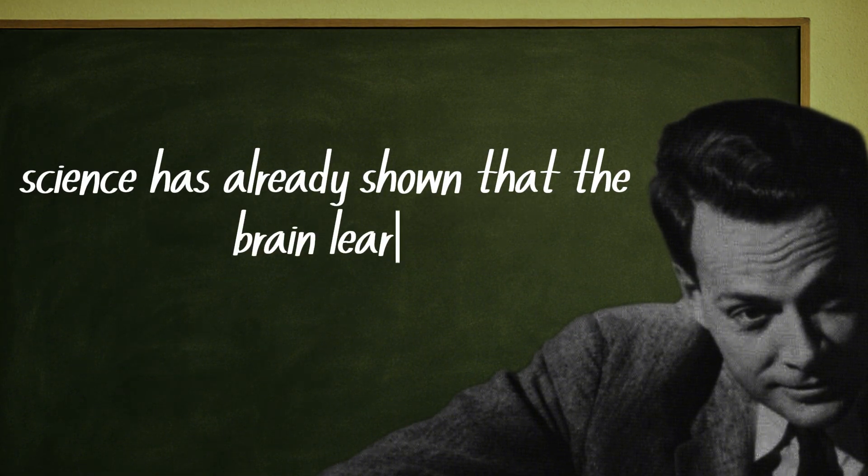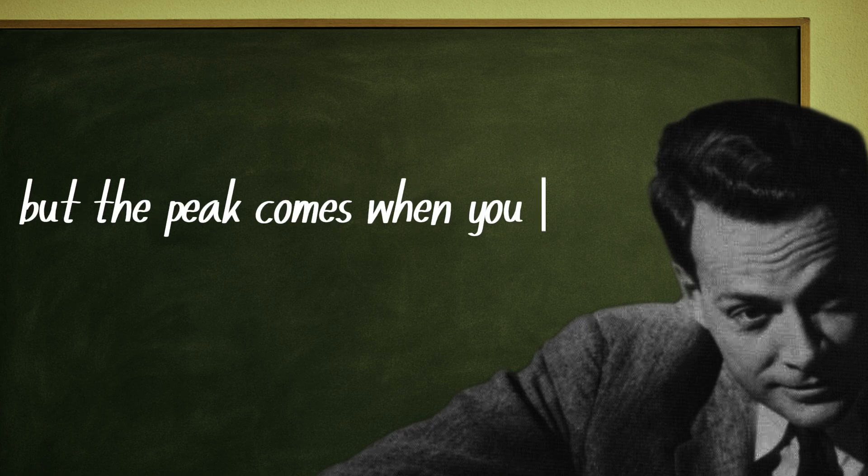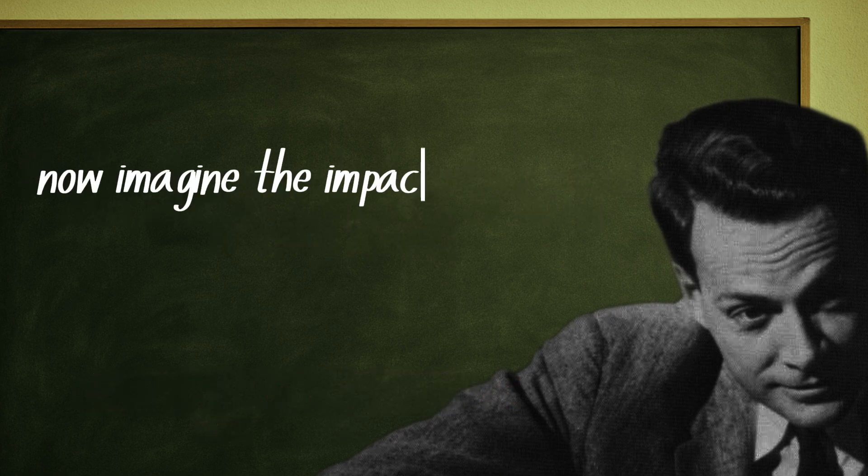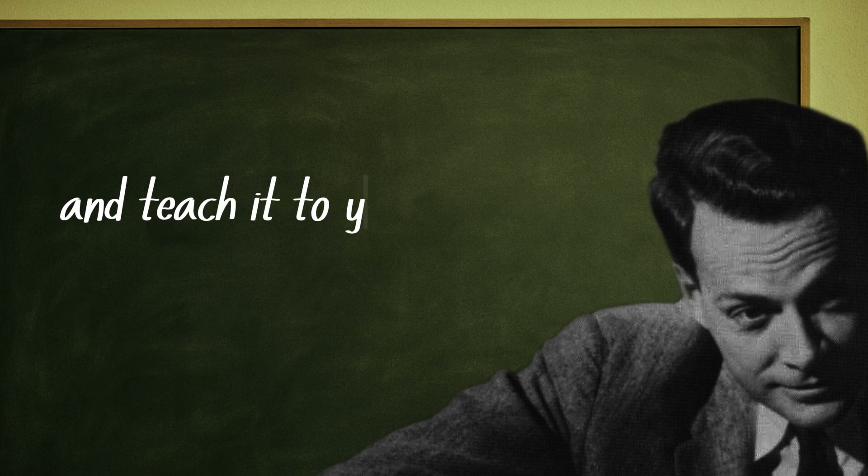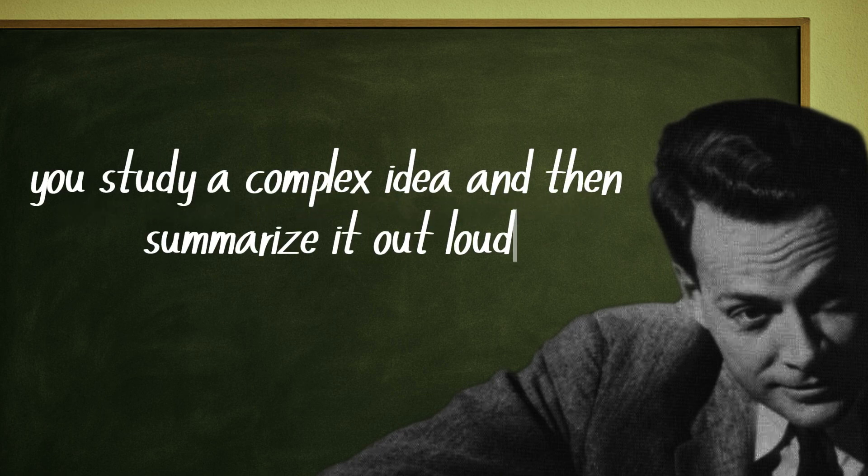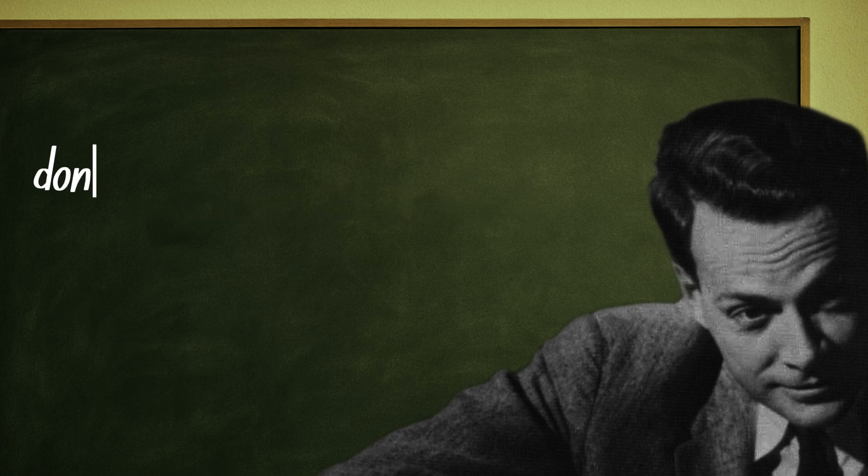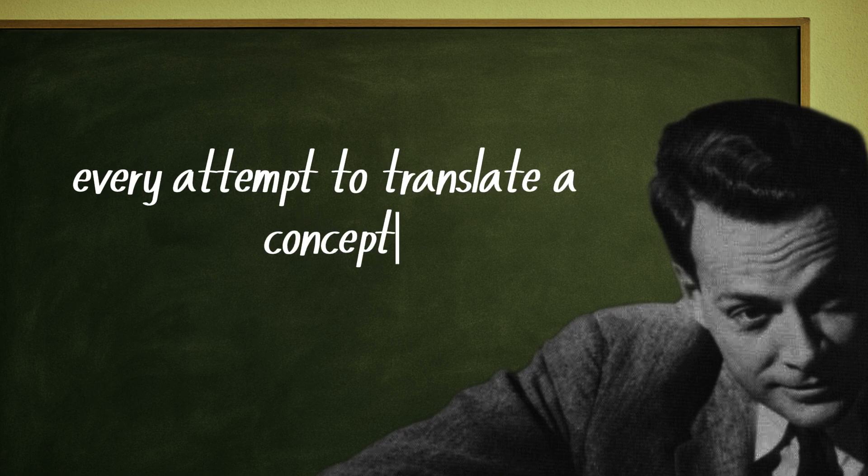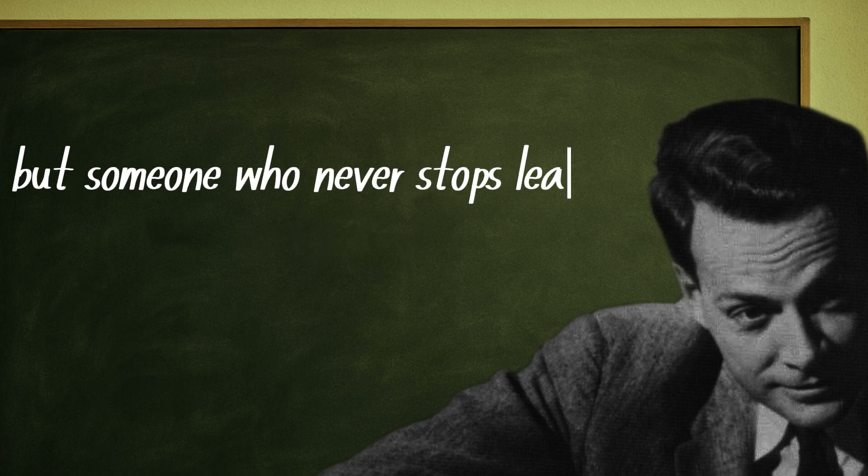Science has already shown that the brain learns in stages. First, when you receive information. Then when you practice. But the peak comes when you teach. That's when your mind realizes what it truly knows and what it still needs to learn. Now imagine the impact this could have on your life. You read a book and then explain it to someone. You learn a new word in another language and teach it to your grandchild. You study a complex idea and then summarize it out loud, as if you were giving a lecture. This habit turns knowledge into mastery. And here's the final key. Don't wait to become an expert to start teaching. Teach from the very beginning, even if it's only a little. Because every explanation is training. Every attempt to translate a concept is a victory of the brain over stagnation. A master is not someone who knows everything, but someone who never stops learning and sharing.